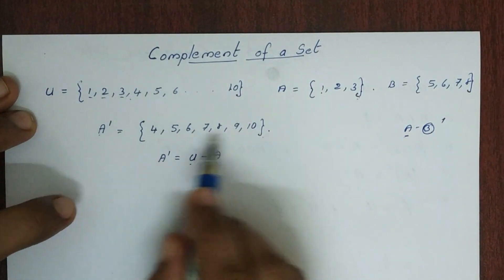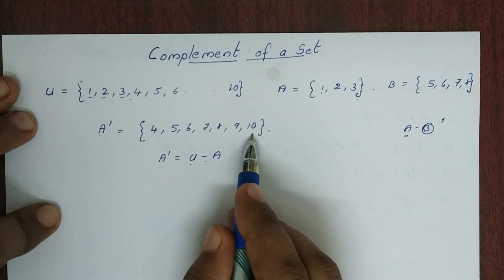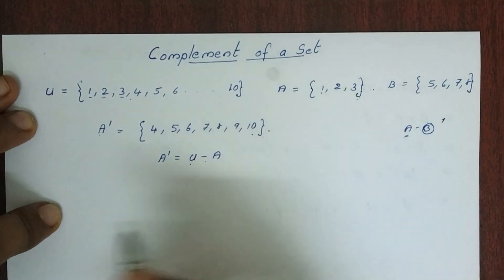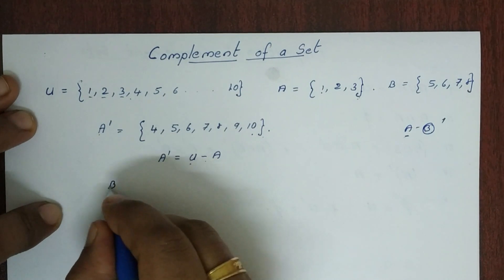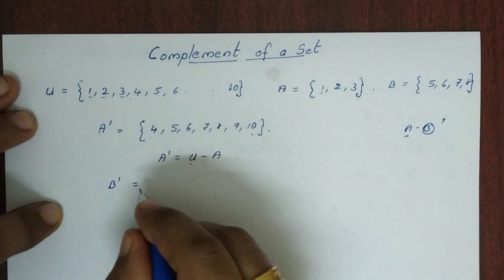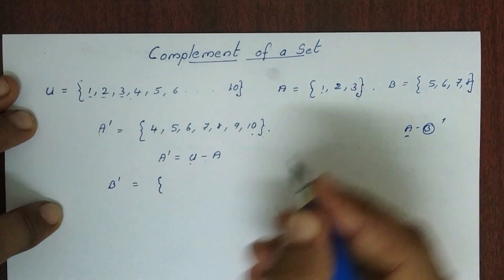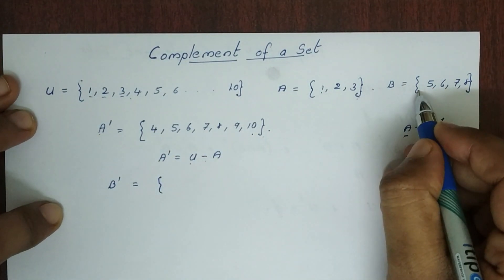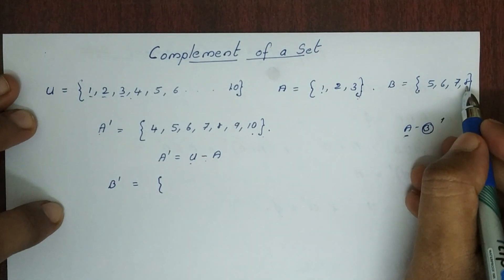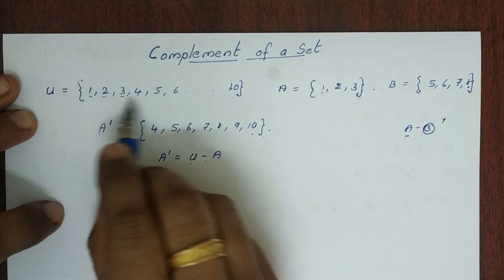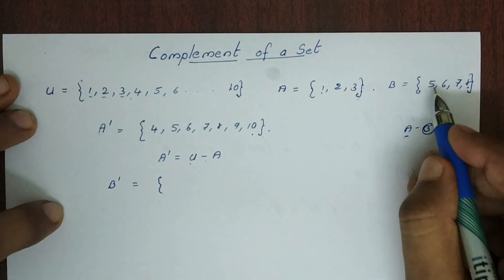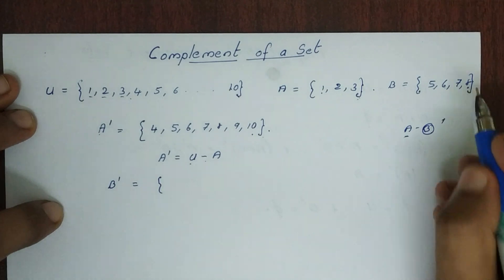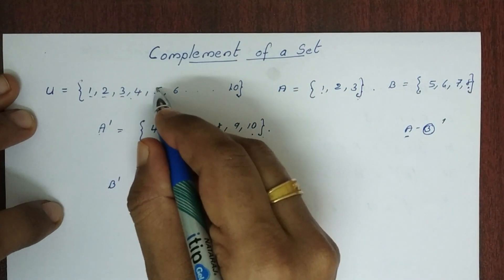So we have A complement. B complement is equal to: B is not in the universal set. Then B is equal to {5, 6, 7, 8}.